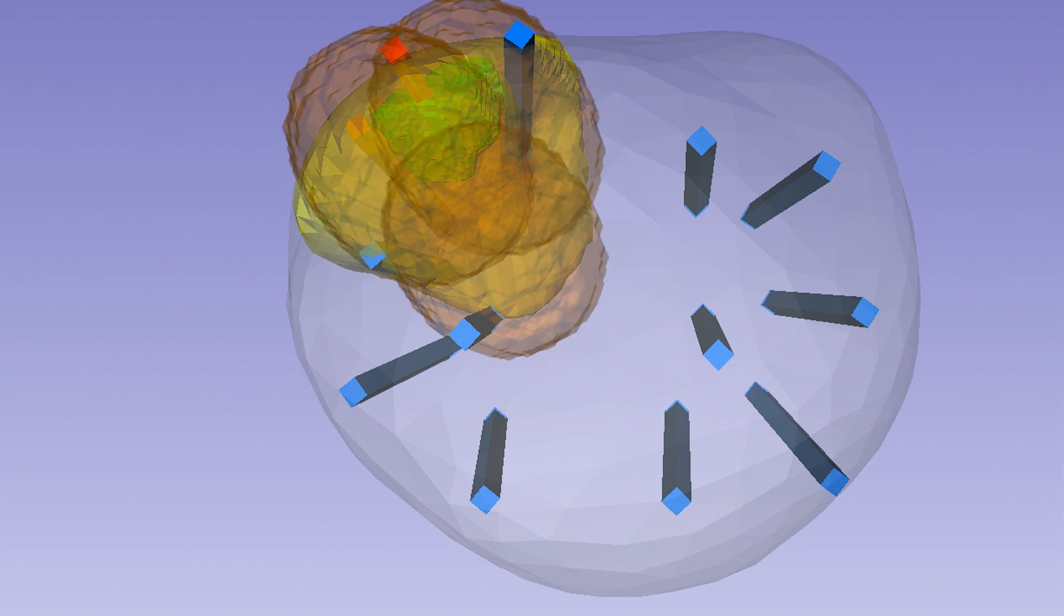The ablations are overlapped to ensure there are no gaps in treatment and positioned to treat beyond the prostate to compensate for capsular cooling. A good plan should minimize damage to the urethra. Once the physician is satisfied, this patient-specific treatment plan is loaded onto the Orion for visualization during the procedure.